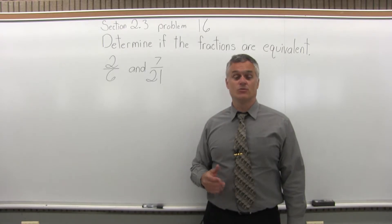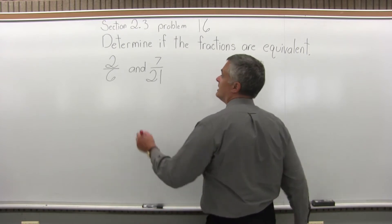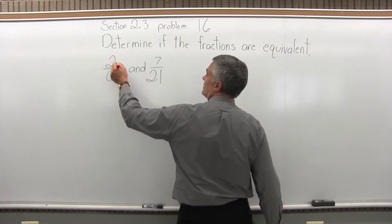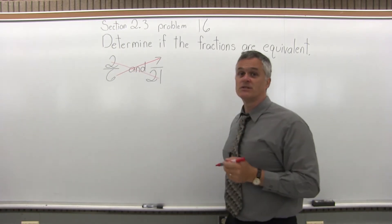So you could just reduce both to the simplest form and see if it comes up to the same answer. Or another option is multiply the numerator of one fraction times the denominator of the other fraction and see if the results come out the same.